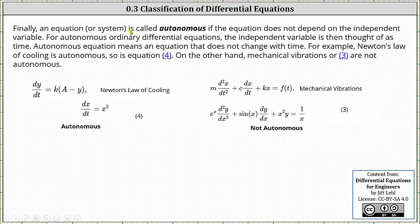Finally, an equation or system is called autonomous if the equation does not depend on the independent variable. For autonomous ordinary differential equations, the independent variable is thought of as time — an autonomous equation is one that does not change with time. For example, Newton's law of cooling and the equation dx/dt equals x squared are both autonomous, as neither depends on the independent variable t. On the other hand, the mechanical vibrations equation is not autonomous because it does depend on t, and equation three is also not autonomous because it depends on the independent variable x.